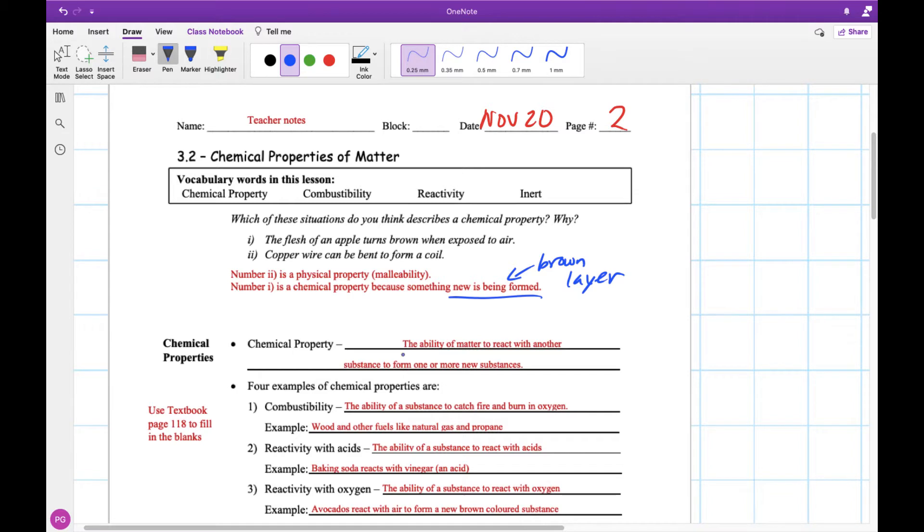A chemical property is the ability of matter to react with another substance to form one or more new substances. And this is the key thing. We're forming new substances when we react with another thing. So when our apple is exposed to air, it reacts with air. The apple and the air react together and they form this brown layer on top of the apple.